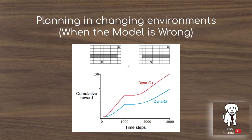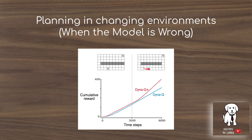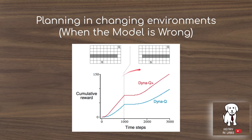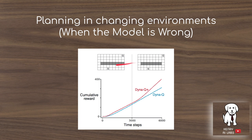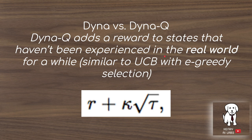An interesting challenge in model-based RL is that the model may become incorrect when the environment changes. In this maze example, the agent learns a path to the goal, but then the environment blocks that path and opens a new one. The model still reflects the old environment. This is especially difficult when the new path is actually better — the agent has little signal to explore the new route since the old route still appears valid in its model.